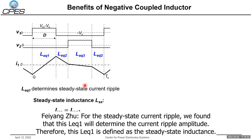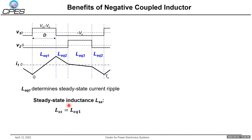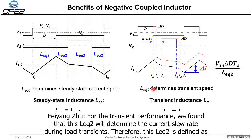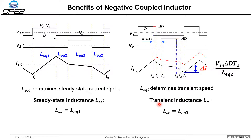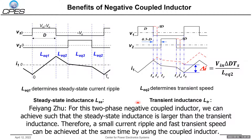For the static current ripple, LQ1 determines the current amplitude, so LQ1 is defined as the static inductance. For the transient performance, LQ2 determines the current slew rate during the load transient. For the two-phase magnetically coupled inductor, we can achieve a static inductance larger than the transient inductance. Therefore, a small current ripple and a fast transient speed can be achieved at the same time by using a coupling inductor.